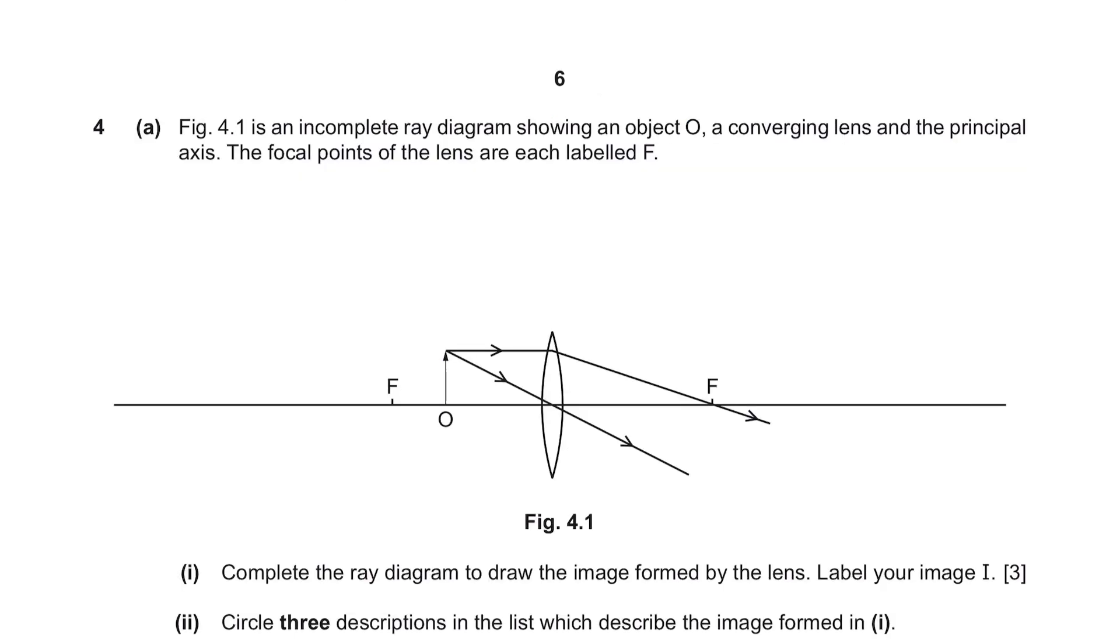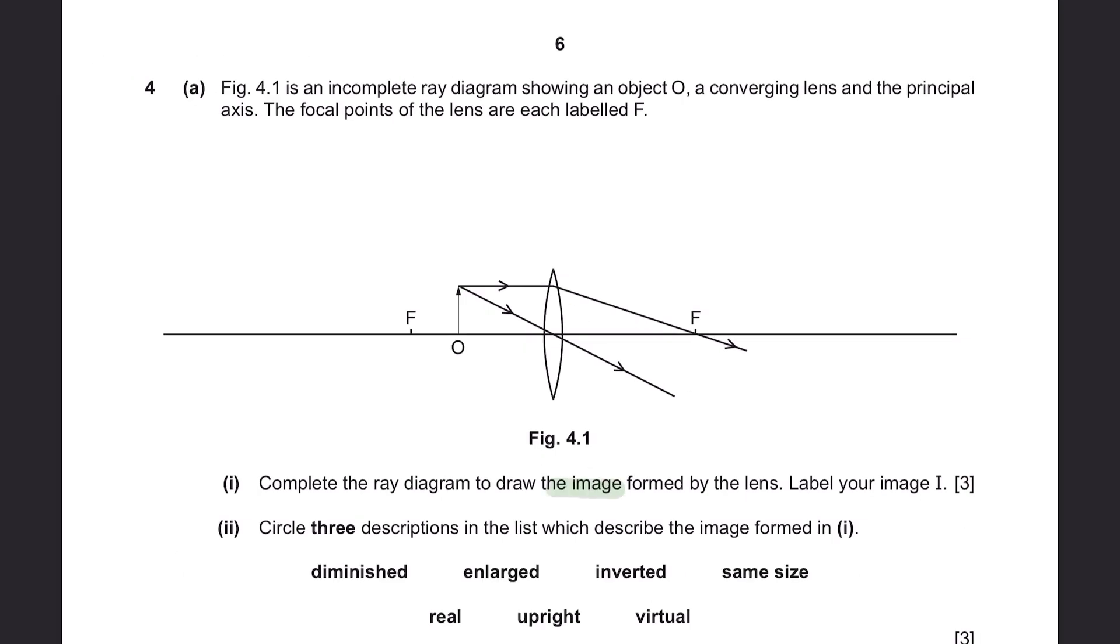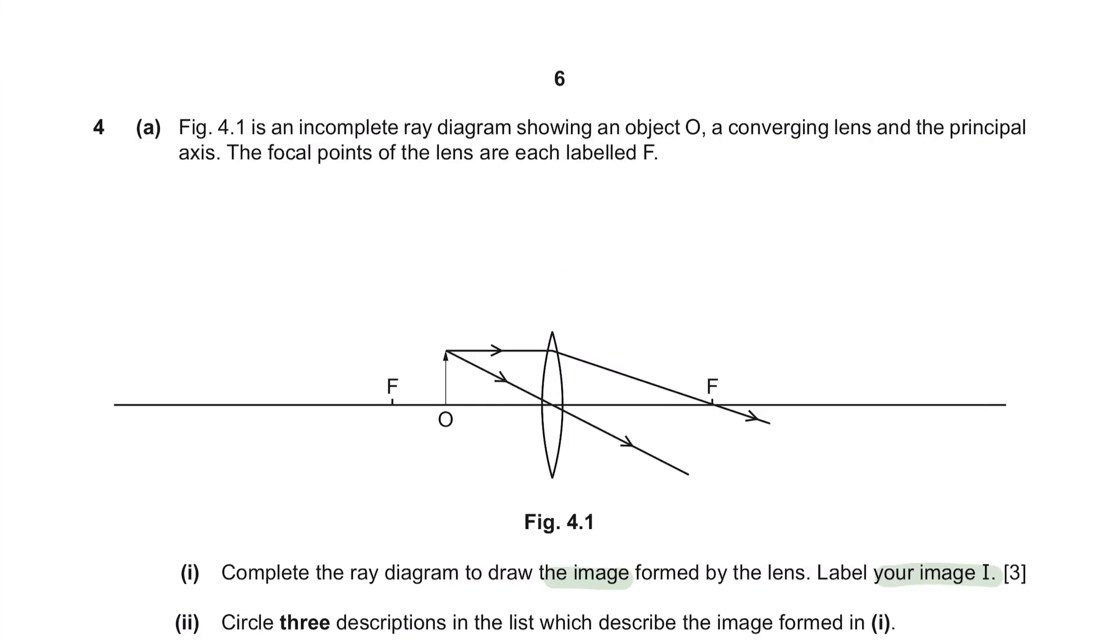Question 4 A. Figure 4.1 is an incomplete ray diagram showing an object O, a converging lens and the principal axis. The focal points of the lens are each labelled F. Complete the ray diagram to draw the image formed by the lens. Label your image as I. As you can see in figure 4.1, the reflected ray is already drawn out for you. But if you look at them, you will see that they are actually travelling away from each other. So these rays would not be intercepting to give us the image. However, if we extend the rays on this side, you will see that they intersect over here. So just draw an arrow like this and label your image I.